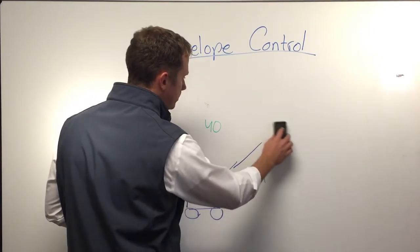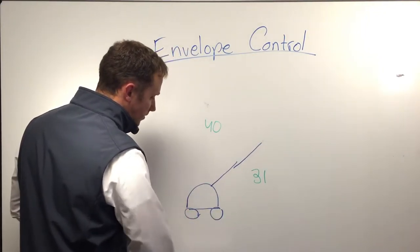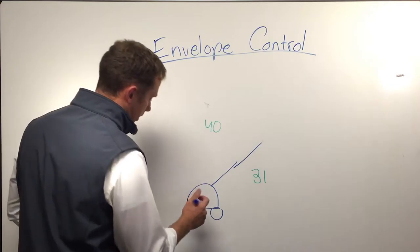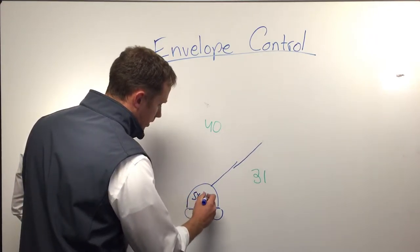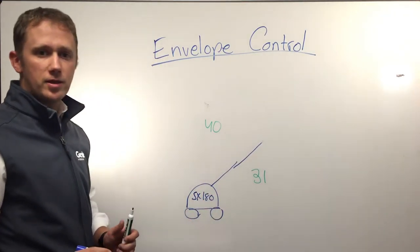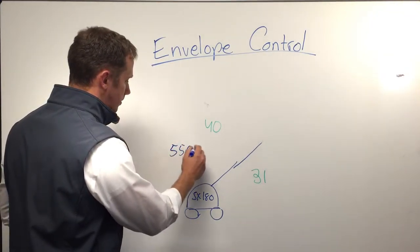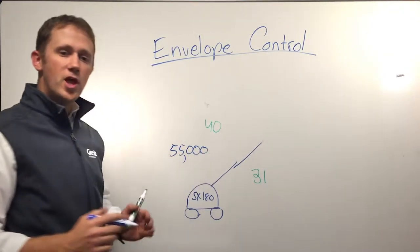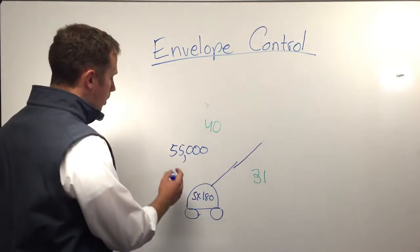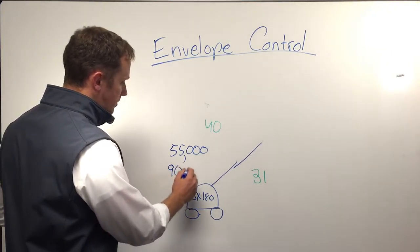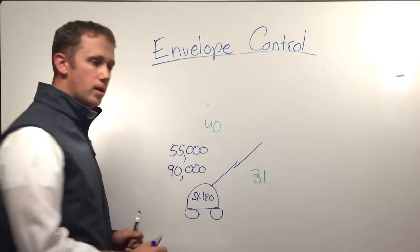As we go up in sizes of booms though, the weights of the machine start to get extraordinary. Specifically when I talk about a machine like the SX 180, this machine weighs in at 55,000 pounds, but with no envelope control in this machine we could expect this machine to be plus of 90,000 pounds.